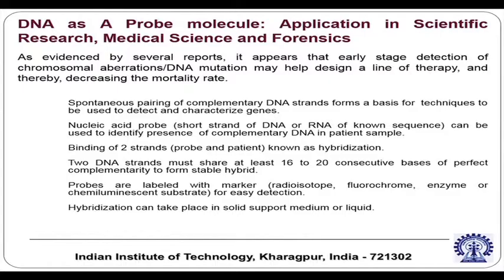Two DNA strands must share at least 16 to 20 consecutive bases of perfect complementarity to form a stable hybrid. The probes are labeled with markers — these markers may be radioisotopes, fluorochromes, enzymes, or chemiluminescent substrates for easy detection.